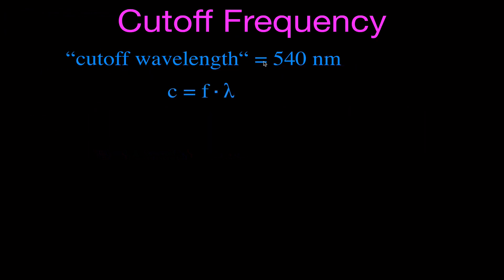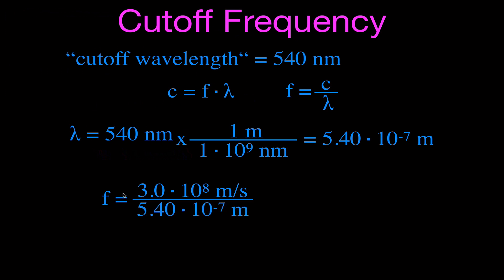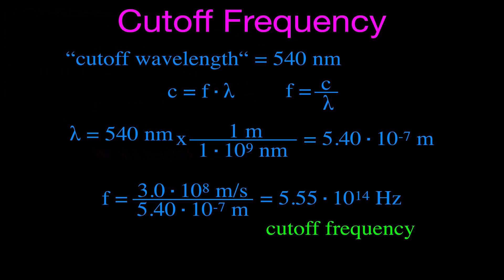The cutoff wavelength is 540 nanometers. Our equation is c = fλ, so the frequency f equals c divided by λ. Converting 540 nanometers to meters: since 1 meter = 1.0 times 10 to the 9 nanometers, the wavelength is 5.40 times 10 to the minus 7 meters. Plugging in the speed of light (3.0 times 10 to the 8 meters per second) divided by 5.40 times 10 to the minus 7 meters gives us the cutoff frequency in hertz.